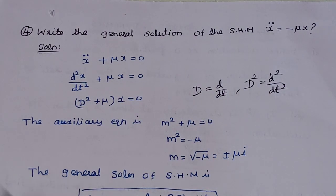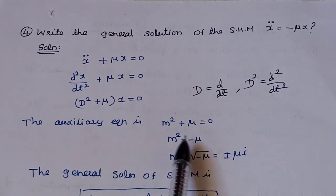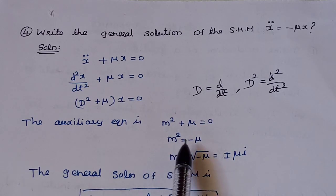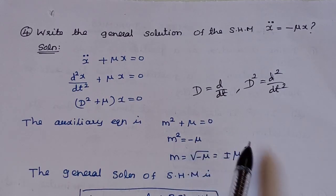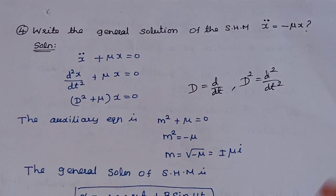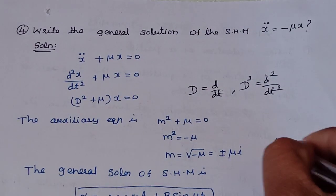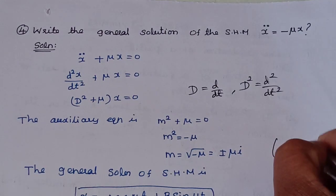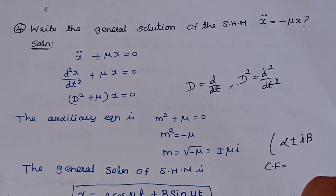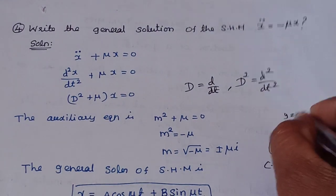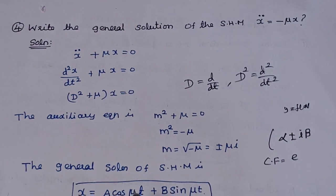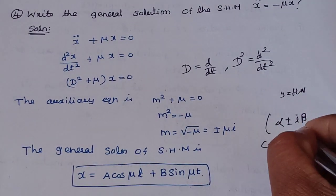The auxiliary equation is m² + μ = 0, so m² = −μ, giving roots m = ±√μ·i. This is a complex root of the form α ± iβ, where α = 0 and β = √μ. The complementary function uses e^(αt) times [A cos(βt) + B sin(βt)].